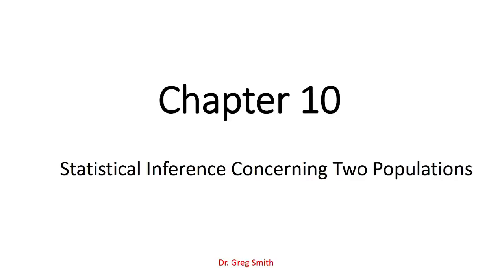Welcome to Chapter 10 of your business statistics course. This is the second chapter on confidence intervals and hypothesis testing. You would have just completed single sample hypothesis testing in Chapter 9, and Chapter 8 led you through confidence interval building for single samples. This chapter takes that to the next step, eventually leading us to something called ANOVA. We're going to start by looking at two populations with two separate samples drawn, one from each population.